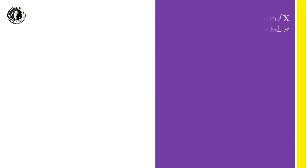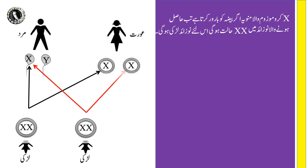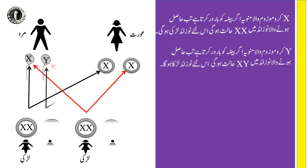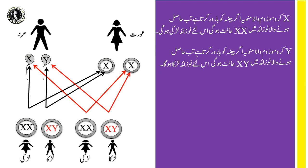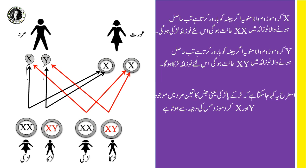X کروموزومز والا منویہ اگر بیزے کو بارور کرتا ہے تب حاصل ہونے والا نوزائد XX حالت میں ہوگا، اس لئے نوزائد لڑکی ہوگی۔ Y کروموزومز والا منویہ اگر بیزے کو بارور کرتا ہے تب نوزائد XY حالت میں ہوگا، اس لئے نوزائد لڑکا ہوگا۔ اس طرح یہ کہا جا سکتا ہے کہ لڑکے یا لڑکی یعنی جنس کا تائین مرد میں موجود X اور Y کروموزومز کی وجہ سے ہوتا ہے۔